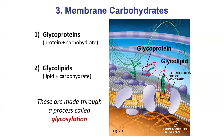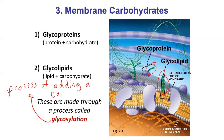These are made through a process called glycosylation — the process of adding a carbohydrate. Whenever you see 'glyco,' it has something to do with carbohydrates: glycogen is a carbohydrate, glycoprotein is a protein with a carbohydrate, glycolipid is a lipid with a carbohydrate, and glycosylation is the process of adding carbohydrate.